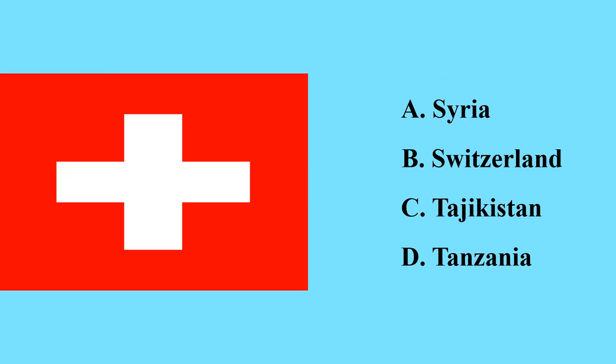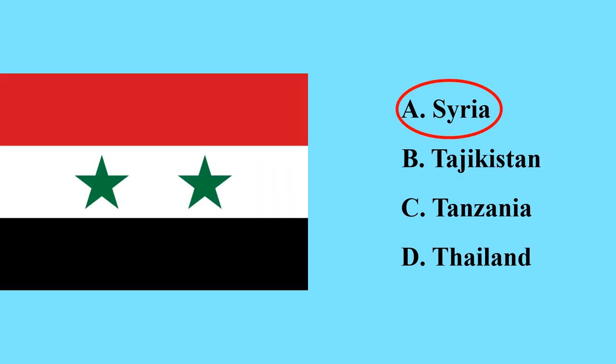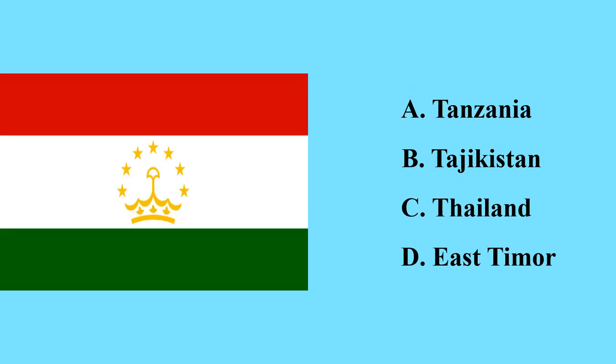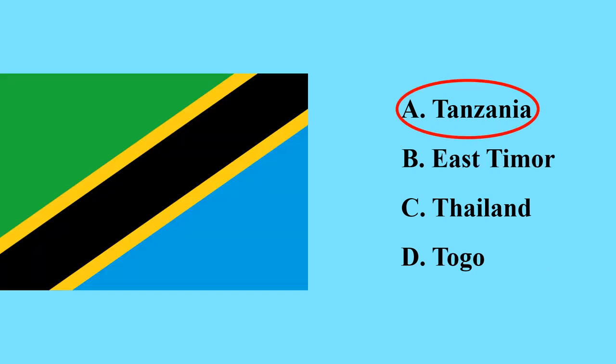This is the flag of Switzerland, a landlocked country in Europe. This is the flag of Syria — it is a country in the Middle East. This is the flag of Tajikistan, a country in Asia. This is the flag of Tanzania, a country in East Africa — Tanzania is where the highest mountain in Africa, Kilimanjaro, is found.